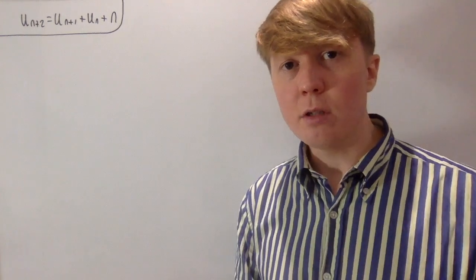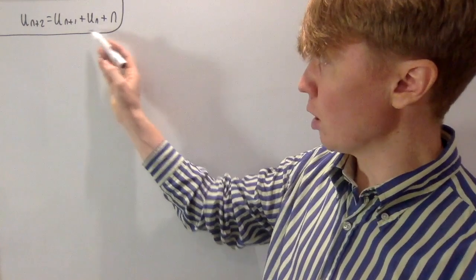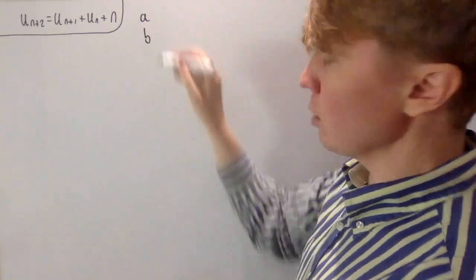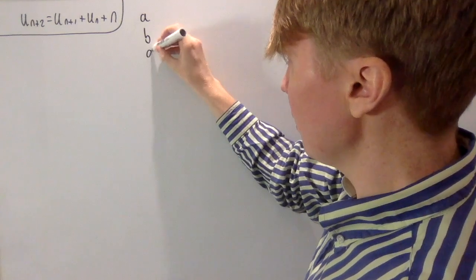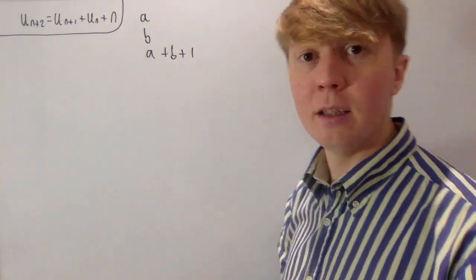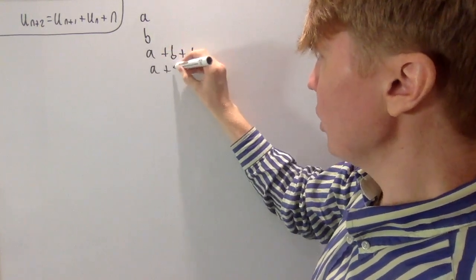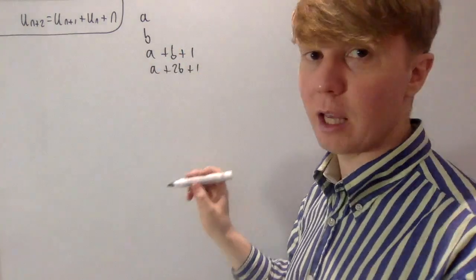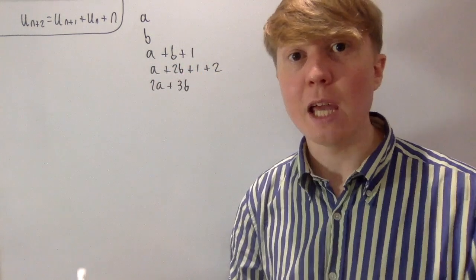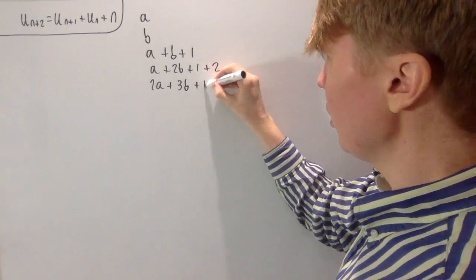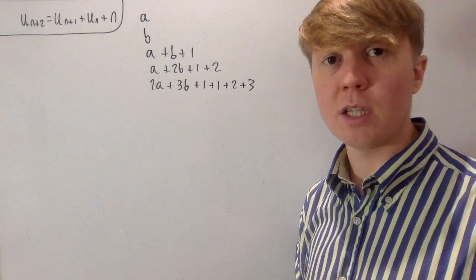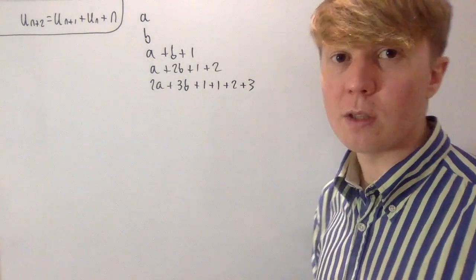For our third sequence, instead of adding the previous two terms plus a constant, we add the previous two terms plus a term whose value actually increases each time — specifically we add n at step n. Starting with a and b, we get a plus b plus 1 for u3 (adding 1 when n equals 1), then b plus (a plus b plus 1) gives a plus 2b plus 1, but we also add 2 for u4. I'm not going to group together the 1s and 2s just yet, since that will help us understand the structure of what's being added.